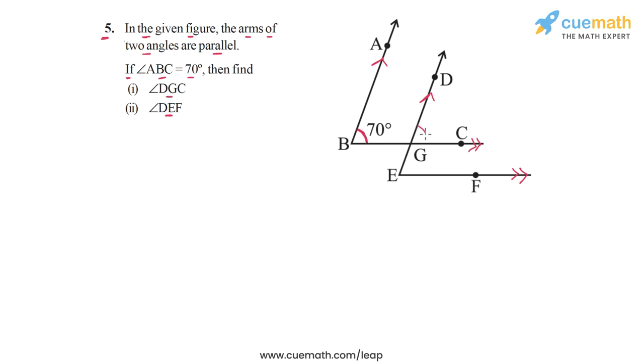So angle DGC is this angle and angle DEF is this angle. It's actually quite easy. We see that DGC forms a corresponding angle pair with this angle at B, which is 70 degrees. So DGC will also be equal to 70 degrees.